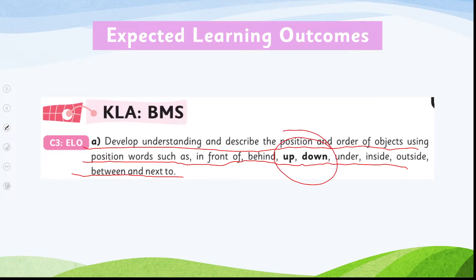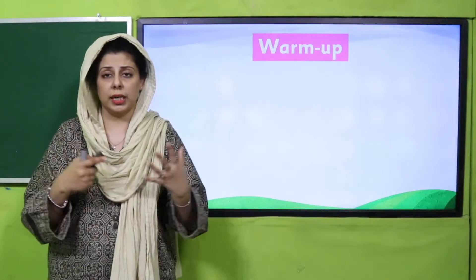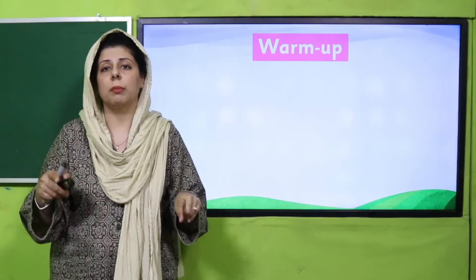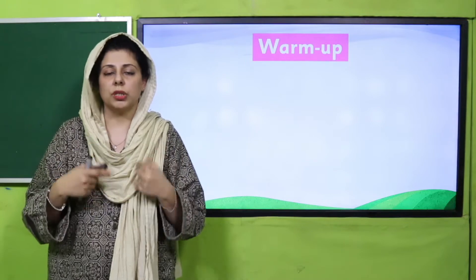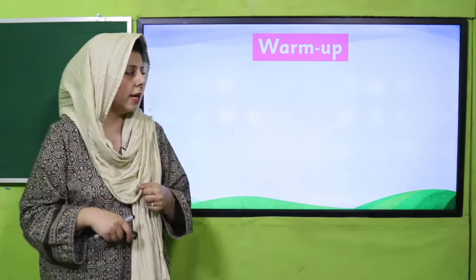So today we will talk about up and down. In the English context, these are called opposites. But in the maths context, it means their position — where they are placed, where they are kept — and what connection and contrast or similarity these objects have with one another.